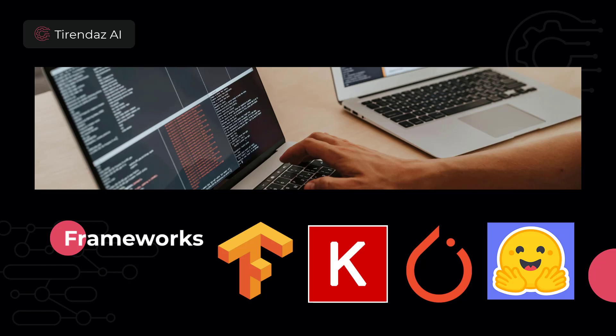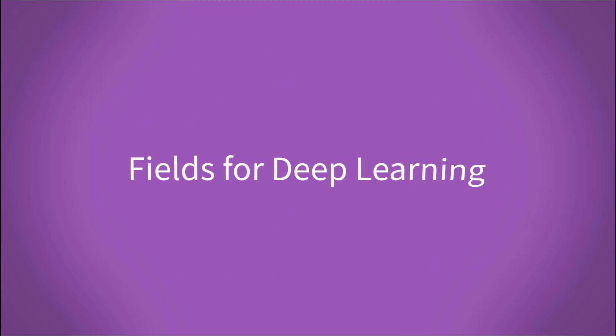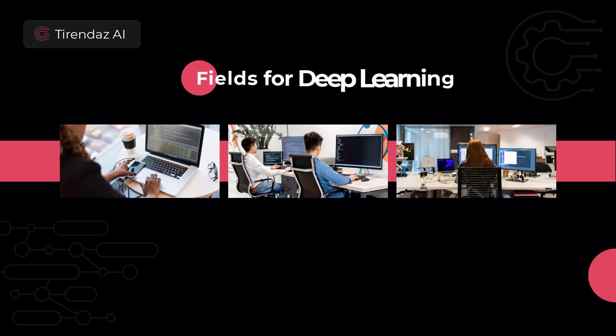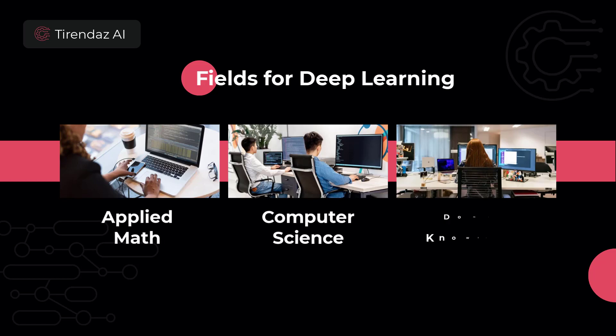We've seen the most used frameworks for deep learning. Let's take a brief look at which areas you need to know to perform deep learning projects. Deep learning is an interdisciplinary area consisting of several fields. Don't worry — you just need to know these areas at a basic level. There are three main pillars of deep learning: applied mathematics, computer science, and domain-specific knowledge.